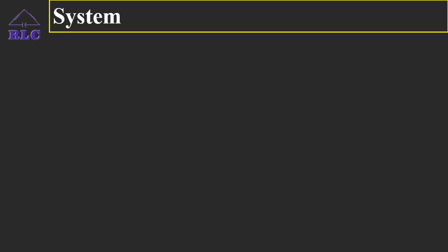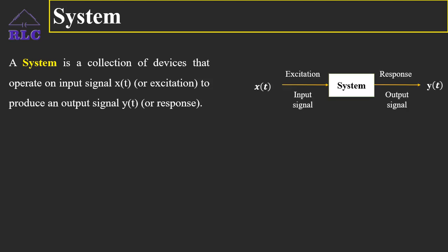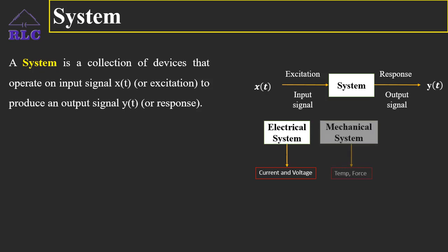We have come across the definition of a signal — it is one which carries information. Now, to operate on a signal, a system is required. A system is a collection of devices that operate on an input signal, also called excitation, and produces an output signal, also called the response of the system. A system can also be defined as a physical device which performs an operation on a signal. X(t) is the input signal and Y(t) is the response. Some systems are electrical systems — where current and voltage act as signals — mechanical systems, where temperature, force and velocities act as signals, and hydraulic systems where displacement and pressure act as signals.